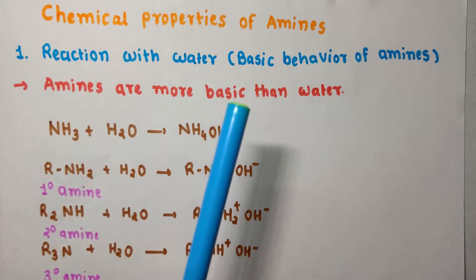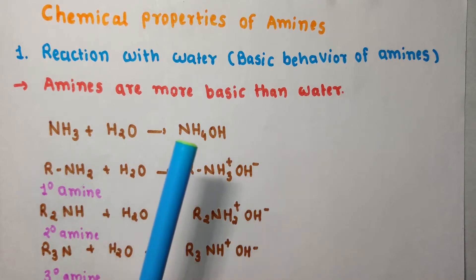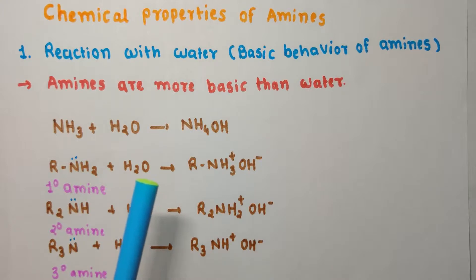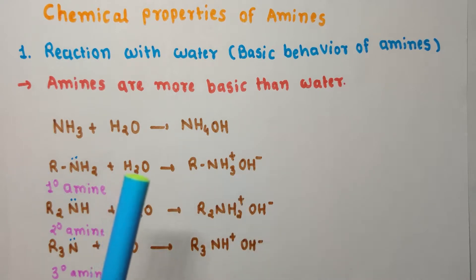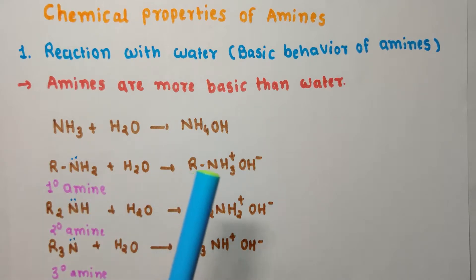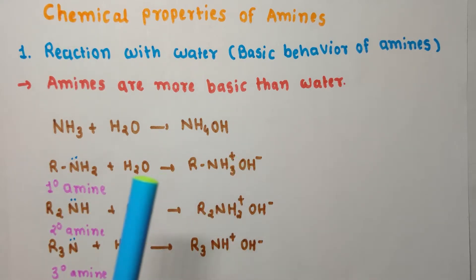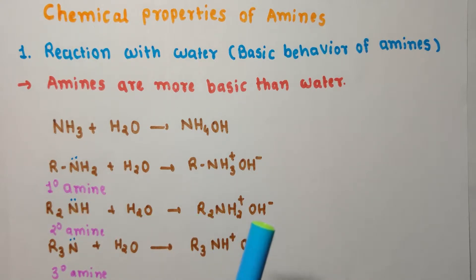Amines are more basic than water. Just as when you dissolve ammonia in water you get ammonium hydroxide, similarly a primary amine when dissolved in water gives alkyl ammonium hydroxide. Water acts as an acid and donates H+, which attacks the lone pair of nitrogen atom, giving RNH3+ and OH−. Similarly, secondary amine dissolved in water gives dialkyl ammonium hydroxide, and tertiary amine gives trialkyl ammonium hydroxide.